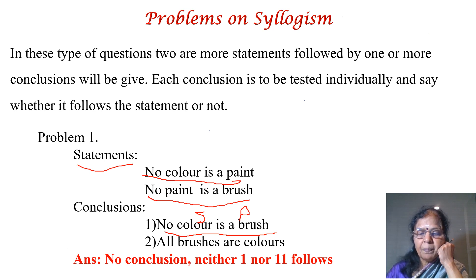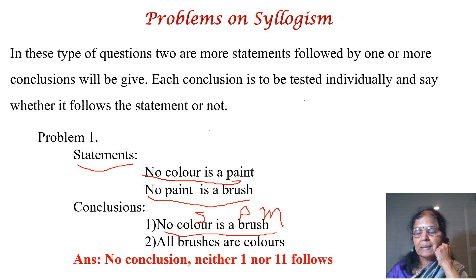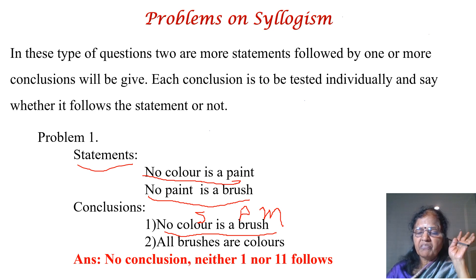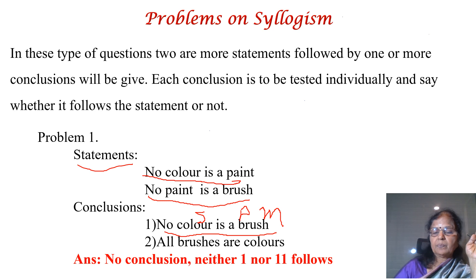The predicate is the major term — remember PM, predicate is major. Brush is the predicate, so brush is the major term. The statement containing the major term is the major premise. The second statement contains brush, so it becomes the major premise. Color is the minor term, present in the first statement, which becomes the minor premise.